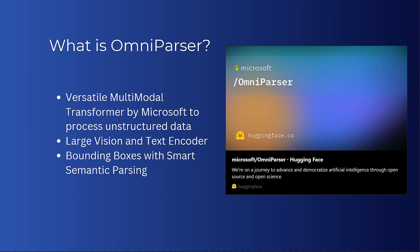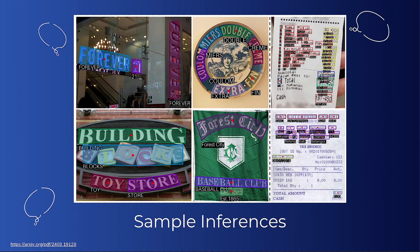So what is OmniParser? At its core, OmniParser is a versatile model developed by Microsoft to process unstructured data — especially documents, web pages, images, or anything else that combines text and visual elements. Unlike typical OCR or basic parsing models, OmniParser leverages large-scale text and vision encoders to recognize text and interpret its structure and context, making it helpful in understanding complex layouts or extracting specific data points from documents or web interfaces. Think of it as a super OCR, but with more context awareness.